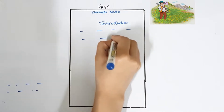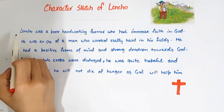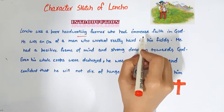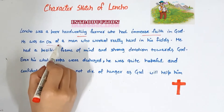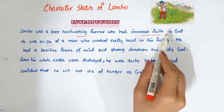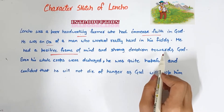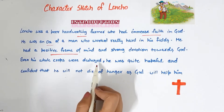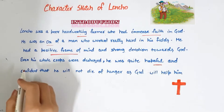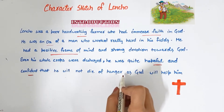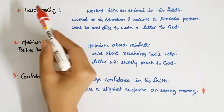Now we will divide our character sketch into three parts: introduction, body, and conclusion. Starting with the introduction — Lencho was a poor, hard working farmer who had immense faith in God. He was an ox of a man who worked really hard in his fields. He had a positive frame of mind and strong devotion towards God. Even when his whole crops were destroyed by a hailstorm, he remained hopeful and confident that he would not die of hunger, as God would help him.